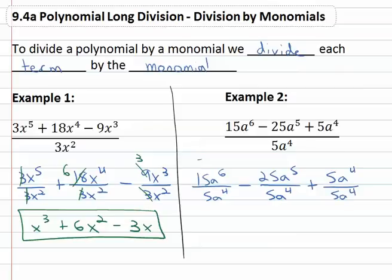And then we can go through and start reducing. 15 over 5 is 3, a to the subtracting exponents 6 minus 4 is 2 minus 25 over 5 is 5.